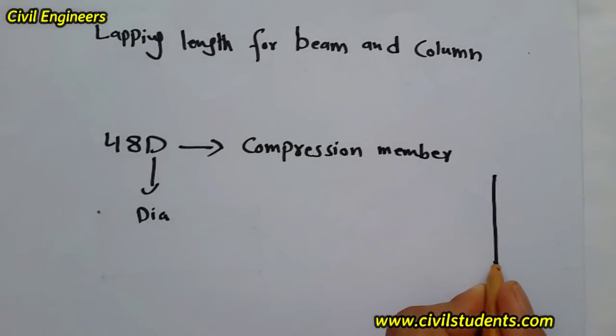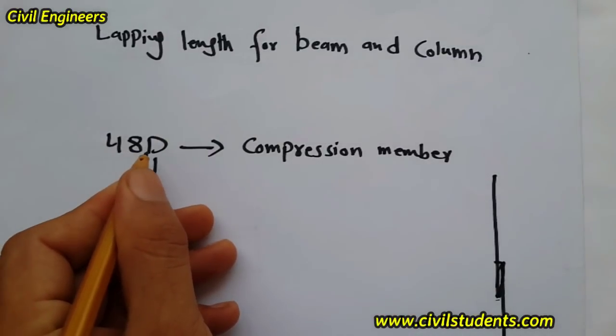When you want to provide the lapping length in column - one steel with another - we have to do it with the formula of 48D.